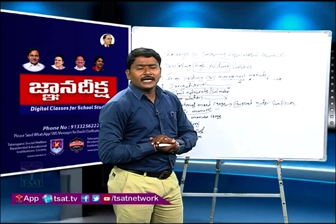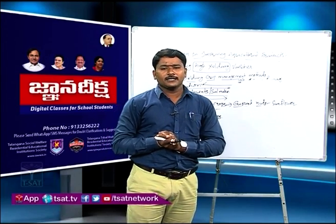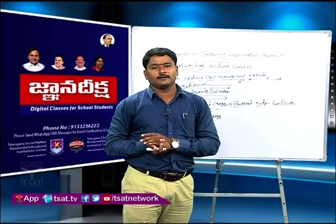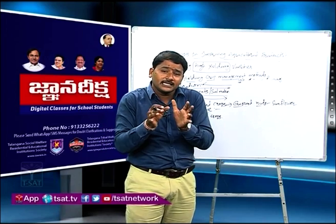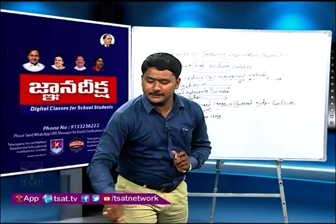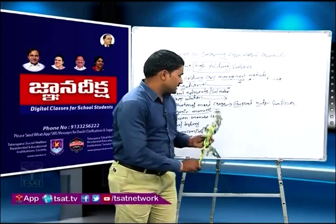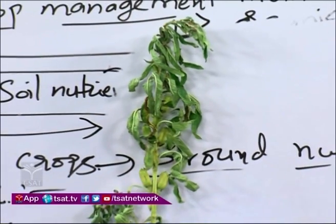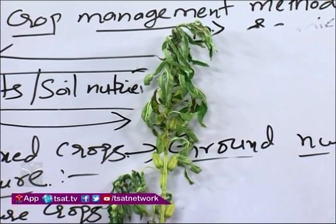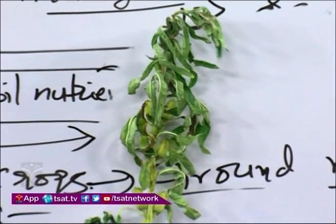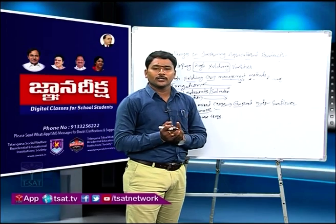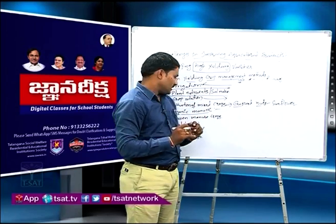In green manure, a technique followed by farmers involves growing a crop and then tilling and plowing it back into the same crop field, so those plants become natural manure for the growing crops. Examples of green manure crops include sesamum, daincha, lobia, kulthi, sunhemp, and jute — these are grown and plowed back into the same soil.